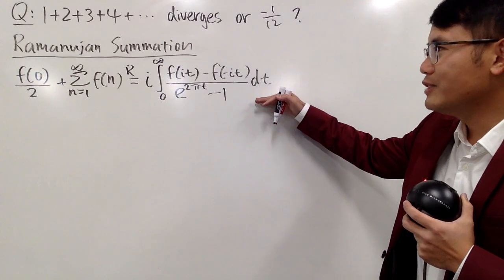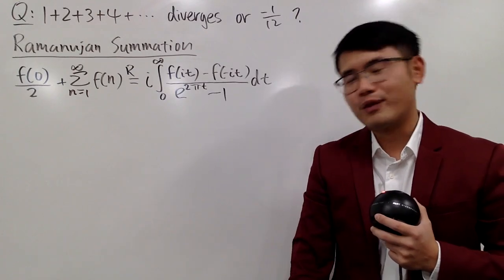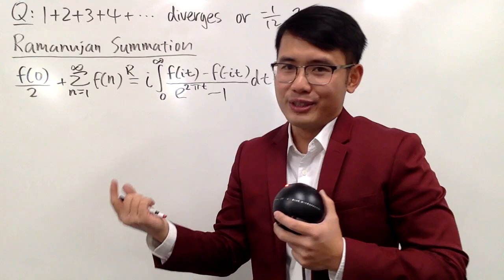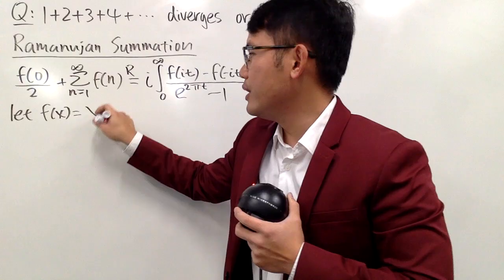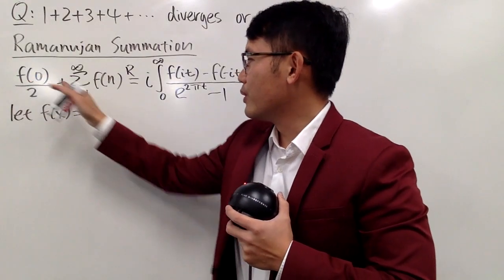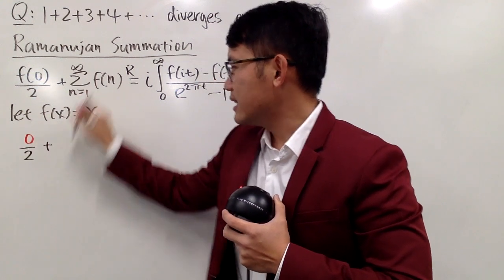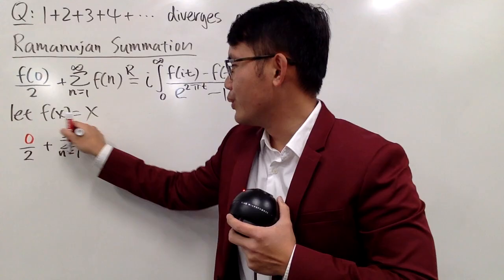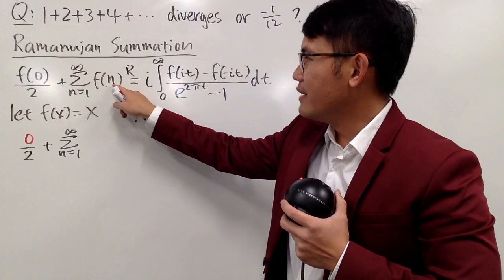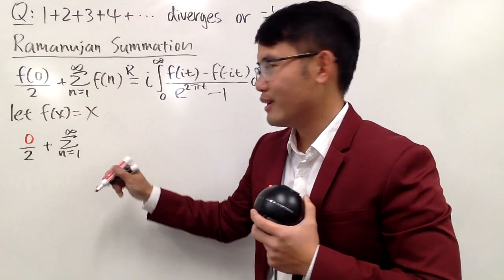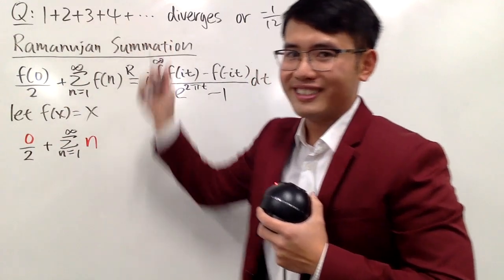So now, I will show you how we can use this to make sense of negative 1 over 12. To do so, we have to come up with a function. Relating this to that, I can just simply pick f of x to be x. So let me write this down. Let f of x equal x. And when you put 0 here, f of 0 is just 0 over 2, so you have 0 over 2. And then you add, this is the sum, as n goes from 1 to infinity.